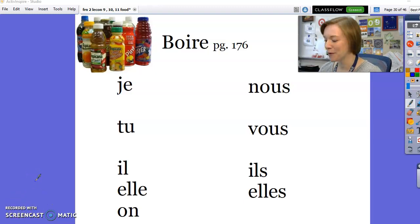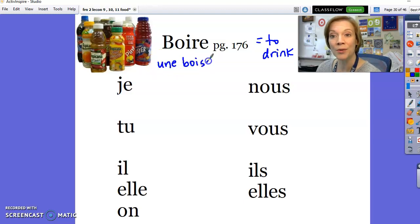Class, we're starting off with a brand new verb. It is the verb boire. Boire means to drink. And you might recognize this word from the word that means a drink from our vocabulary a couple weeks ago. Une boisson. Vous voyez? Une boisson is a drink. Boire is the verb to drink. So if you want to say I'm drinking a drink, you say je bois une boisson.